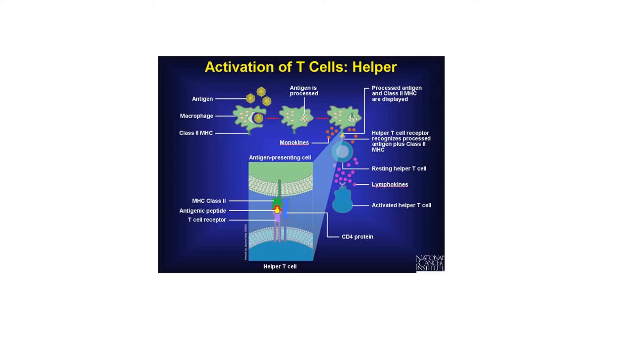This antigen presenting cell displaying epitope in MHC class II will then mix and mingle with inactive helper T cells in the lymph nodes, lymphoid organs, and lymphoid tissue. This antigen presenting cell is in search of the correct inactive helper T cell to activate.